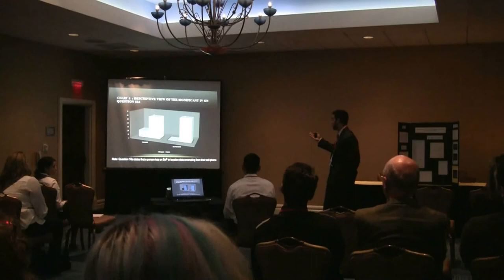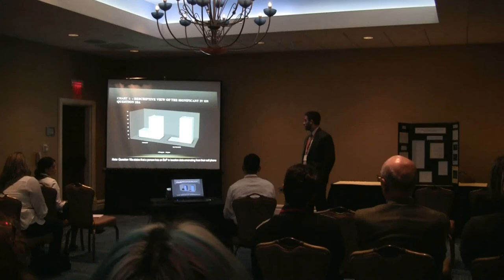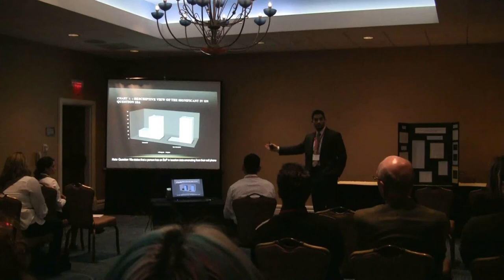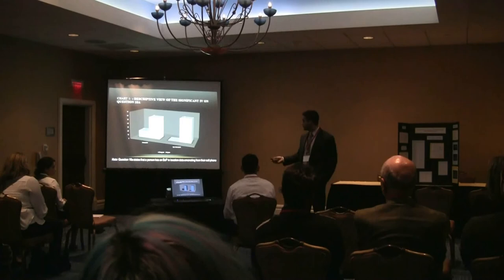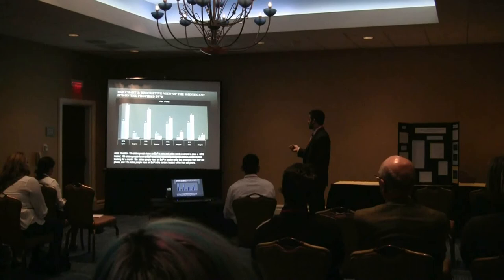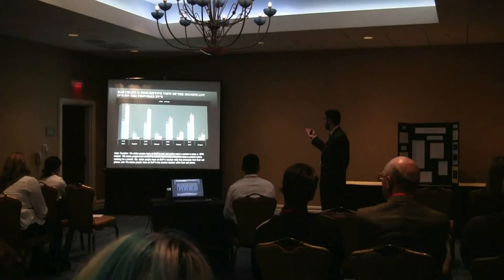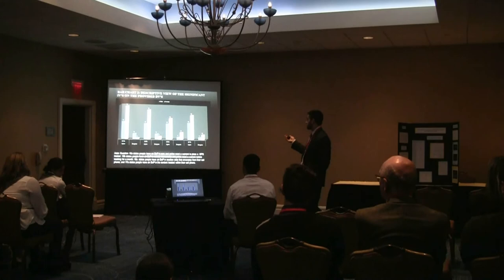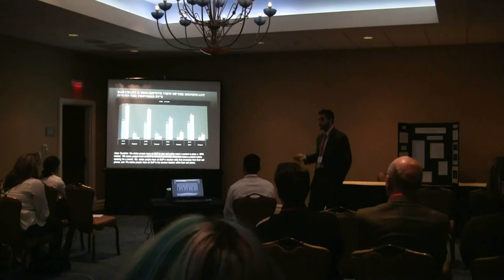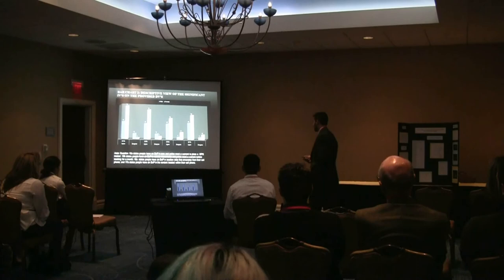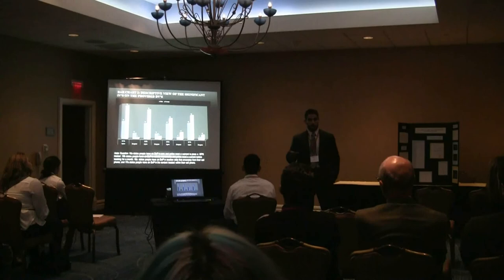Chart 1 is a descriptive view of significance on the independent variable for Question A, which states that a person has an expectation of privacy in location data emanating from their cell phone. We have agree and disagree, and we have interactive and not interactive with law enforcement. Then I combined several questions — Questions 15, 16, and 17 — covering expectations of privacy in cars, in moving vehicles, location data from cell phones, and the content within a cell phone. There's been a lower court case that decided that the content of your cell phone should be protected just like a U.S. mail letter sent to you.